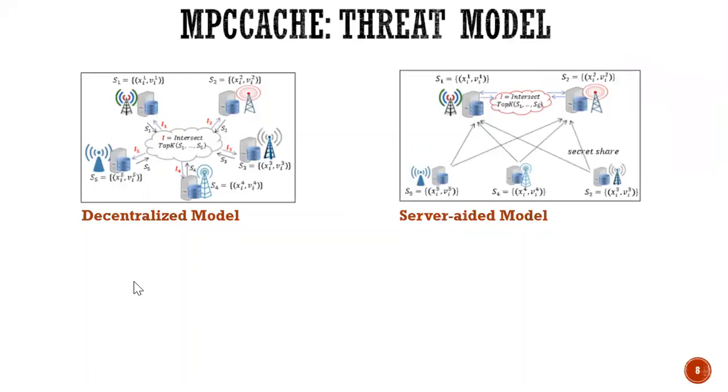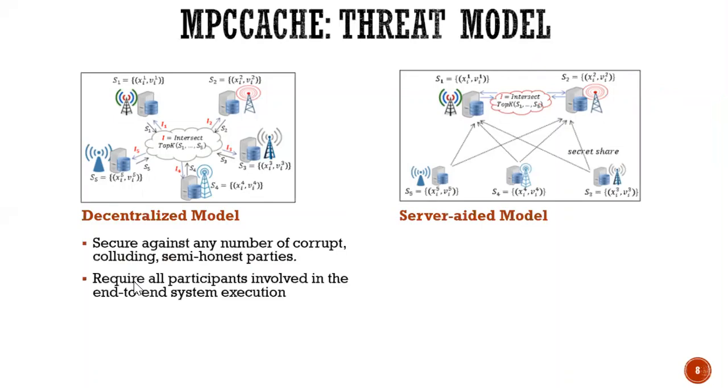So in this work, we consider two popular threat models. The first one is decentralized model. So that model secures, again, any number of corrupt, colluding semi-honest parties. And therefore, it requires all participants involved in the end-to-end system executions. So for that model, it provides strong security, but less efficient.